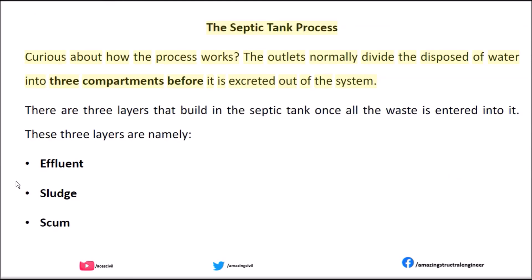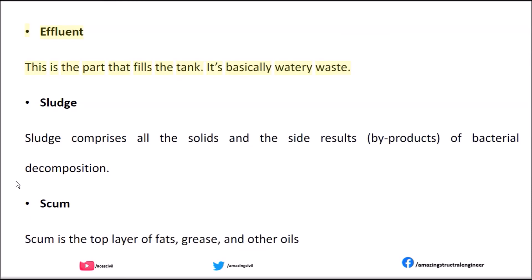The septic tank process: the outlet normally divides the disposed water into three compartments before it is discharged out of the system. There are three layers that build up in the septic tank once all the waste has entered it. These three layers are: effluent — this is the part that fills the tank, it's basically watery waste; sludge — which comprises all the solids and the by-products of bacterial decomposition; and scum — which is the top layer of fats, grease, and other oils.